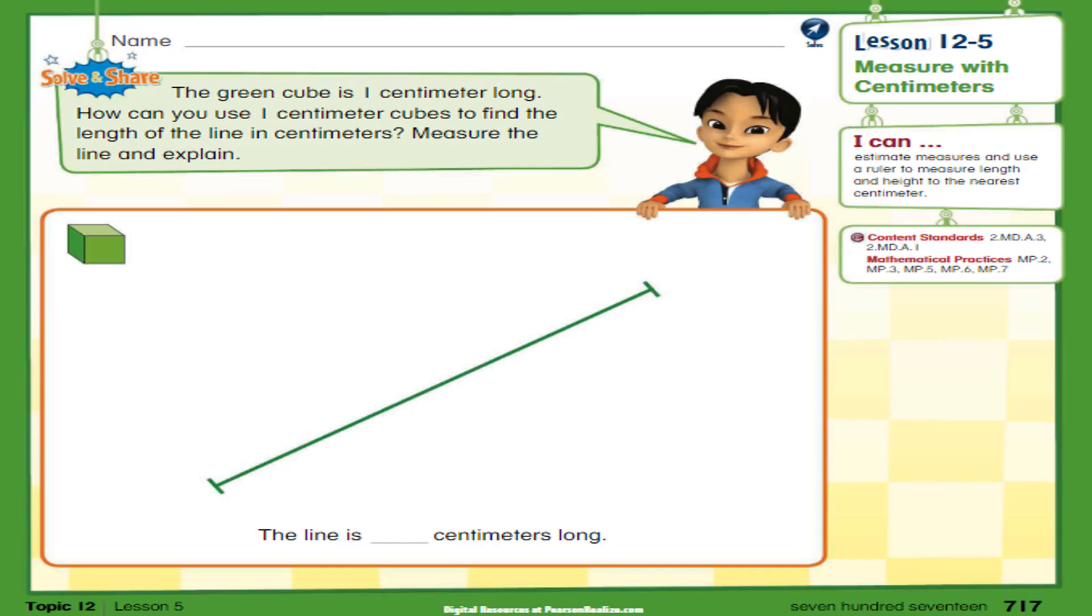Page number 717, lesson 12.5, measure with centimeters. The green cube is one centimeter long. How can you use one centimeter cube to find the length of the line in centimeters? Measure the line and explain.